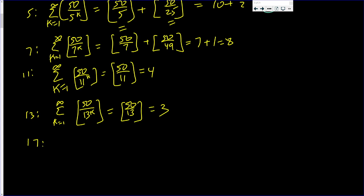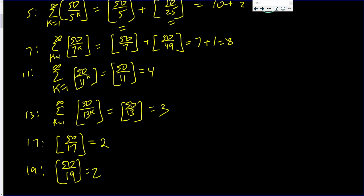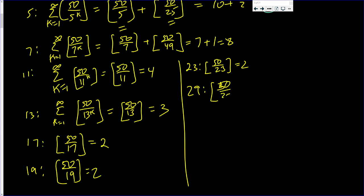The next integer is 17. 50 over 17 — 17 squared will be bigger than 50, so 17 goes into 50 between 2 and 3 times, giving 2. For 19: 50 divided by 19, 19 goes in 2 times. The next one is 23: 23 goes into 50 two times. Next is 29. These numbers are now more than 25, and 25 goes into 50 two times.